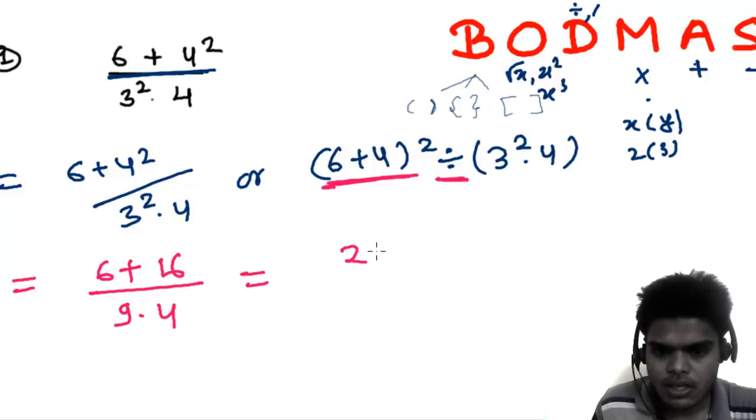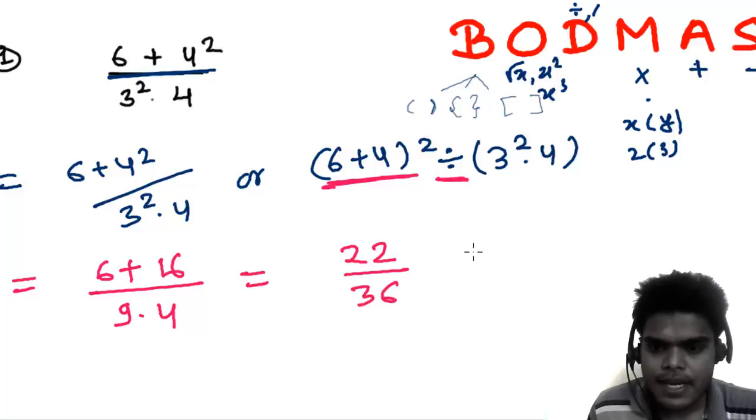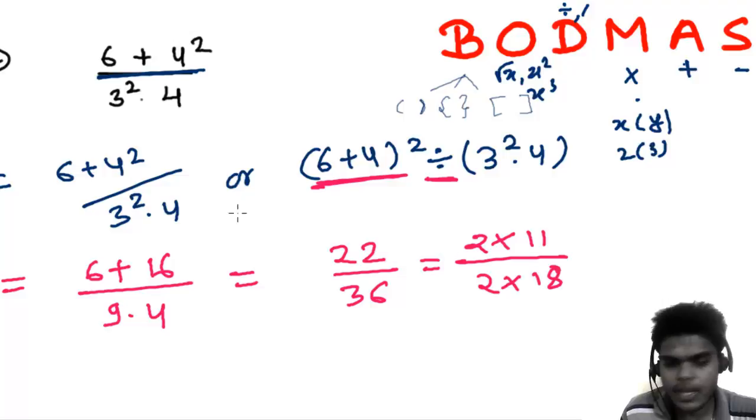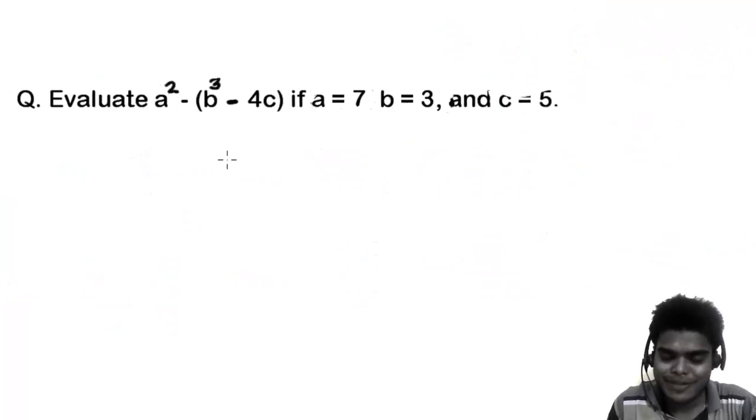Now you can cancel these two things. 22 is actually 2 times 11, and 36 is 2 times 18. As you can see, you can cancel this 2 and this 2, and then you'll get the answer 11 over 18. That's your answer.